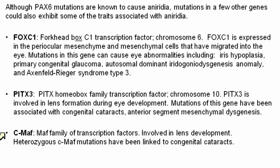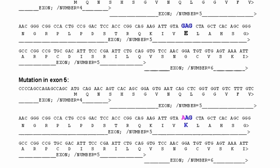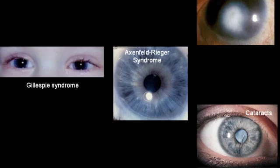Last but not least, CMAF is a large family of transcription factors. The CMAF gene is controlled by Pax6, and we know that it's involved in lens development. Mutations in CMAF often give rise to congenital cataracts and may affect other parts of anterior eye development as well. You can already see that these three genes — all of which can affect iris or lens development — can give rise to an eye phenotype similar to aniridia, but not a carbon copy.